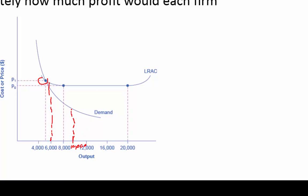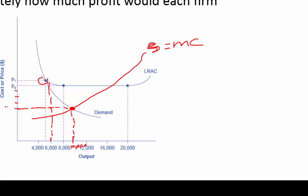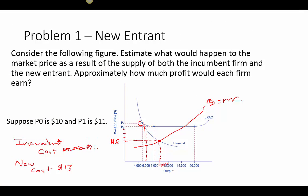Taking the output level of 10,000 up to the demand curve and reading across — going down from 10, 9, 8, 7, 6 — the market price is going to be about $6. With the incumbent's cost at $11, that's a loss of $5 per unit. For the new entrant at $13 cost, that's a loss of $7 per unit. So neither firm is making a profit.